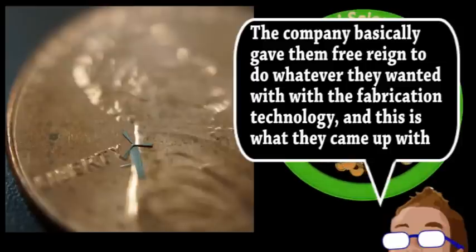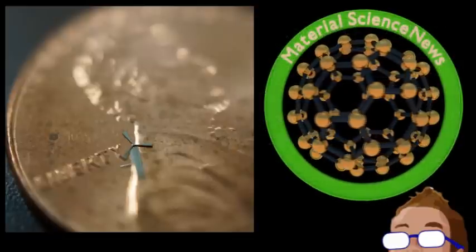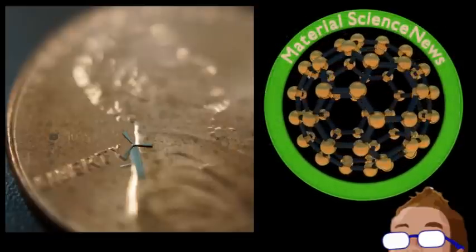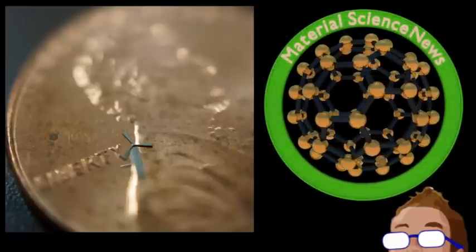Obviously, each windmill cannot generate much power, but they can be easily mass-fabricated by the thousands. For mobile devices, the idea is that a case covered in these windmills could charge a phone by waving it around or exposing it to outdoor wind. On a larger scale, they hoped that massive arrays could also be applied to the roof or walls of buildings to generate clean energy from wind, since this technology can go many places that conventional wind turbines cannot.